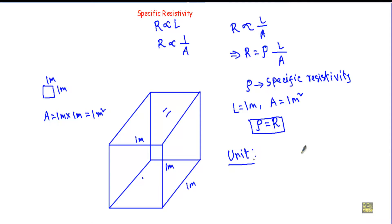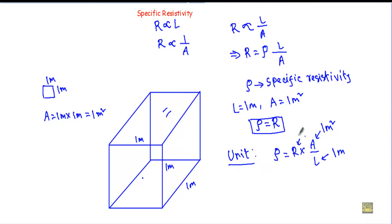Specific resistivity Rho equals R multiplied by A divided by L. Area A has units of meter square, length L has units of meter, and resistance has units of ohm. Therefore we get ohm times meter square divided by meter, which gives us ohm meter. The unit of specific resistivity is ohm meter.